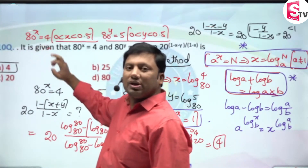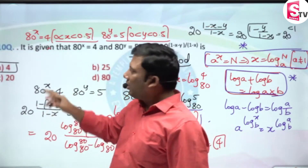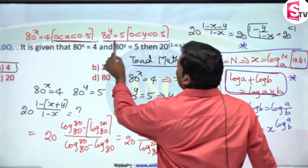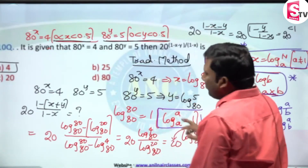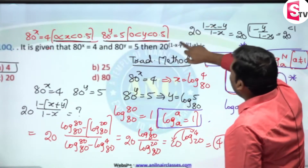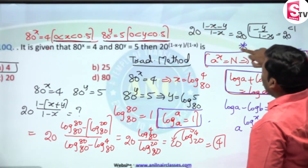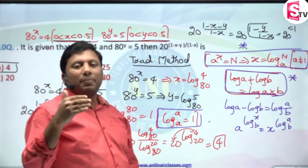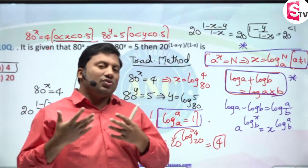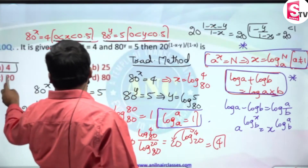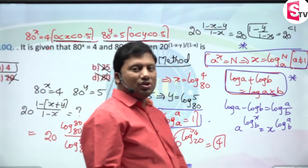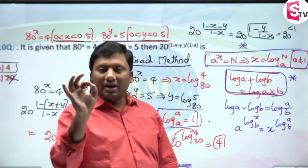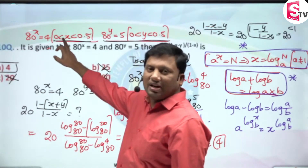To repeat: 80^x = 4, and 80^0 = 1, so since 4 > 1, x > 0. Similarly 80^y = 5 means y > 0. With x > 0 and y > 0, the exponent (1 - x - y)/(1 - x) simplifies: the power is 1 minus (y/(1-x)), which is less than 1. So 20 raised to a power less than 1 is less than 20. All other answer options are greater than or equal to 20, so the answer must be 4.